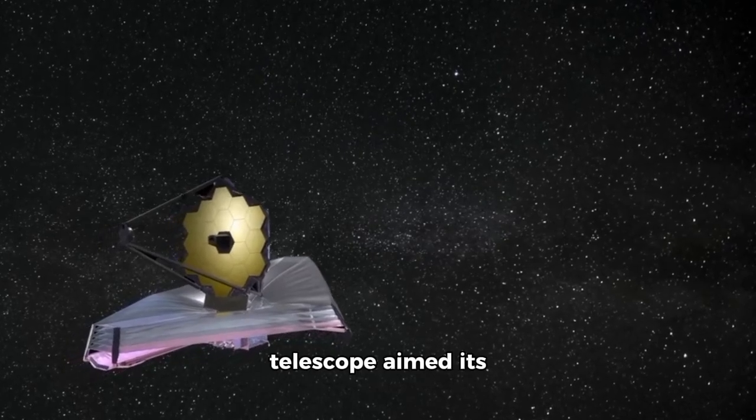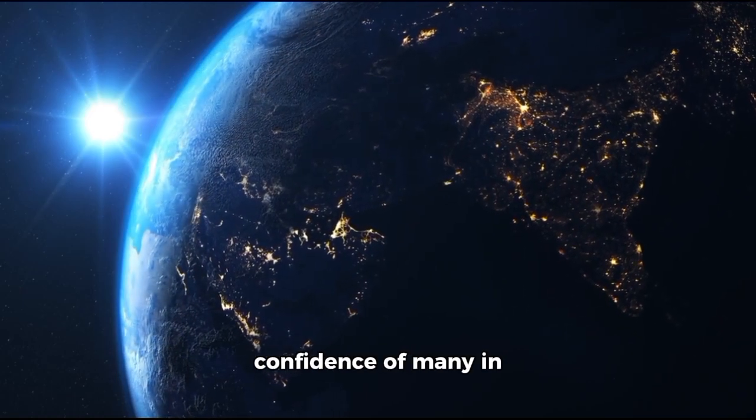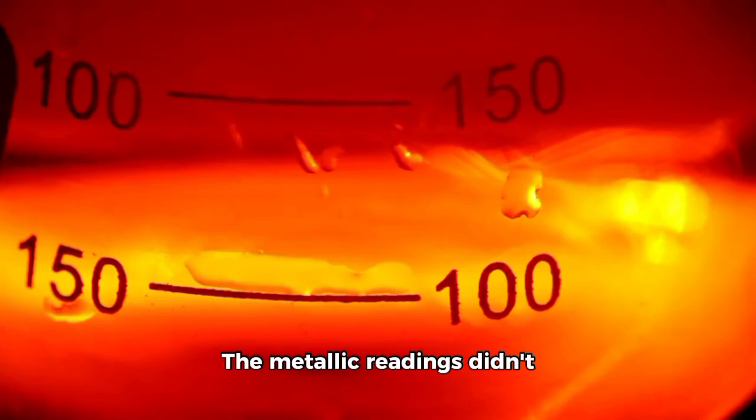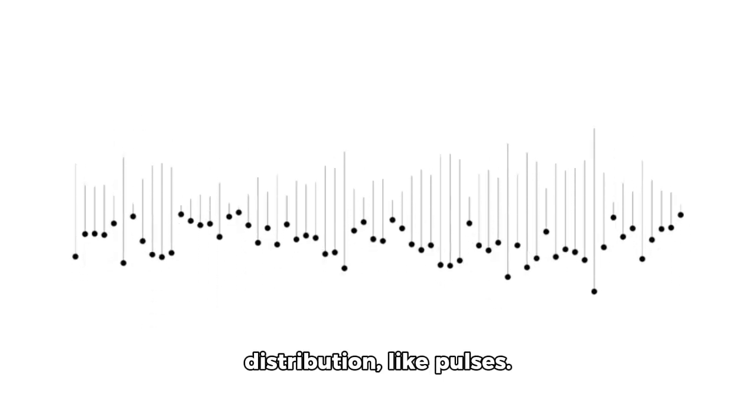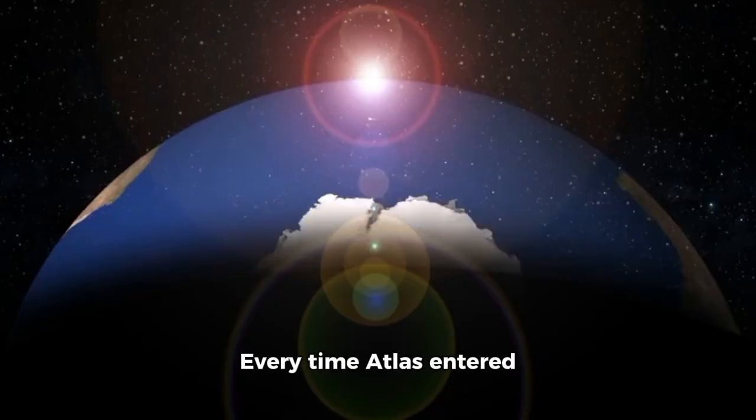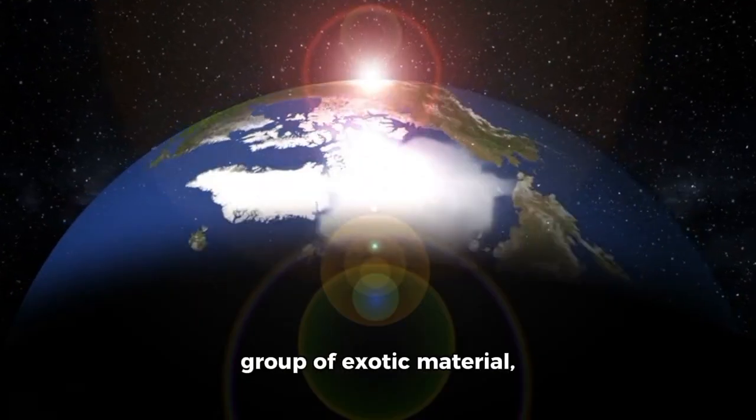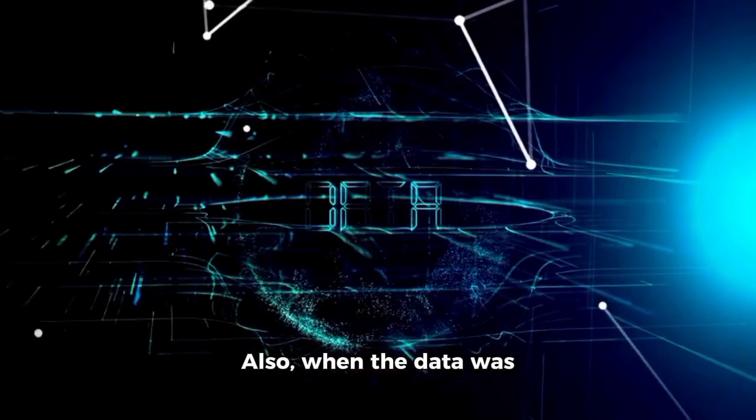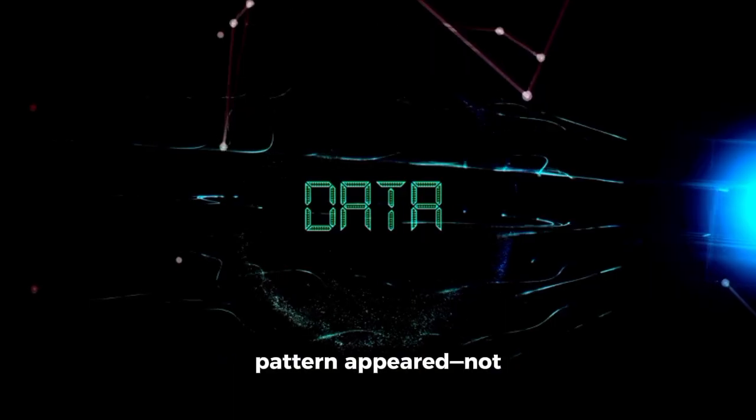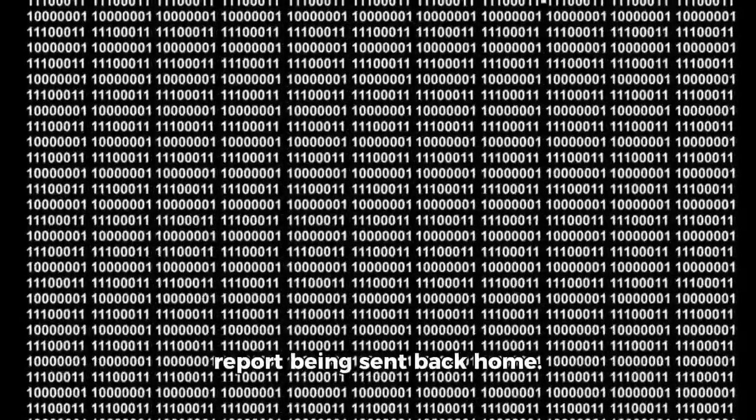When the James Webb Telescope aimed its infrared eye at 3-Eye Atlas, it wasn't just looking for chemical composition. It was listening, in its own way, for order. And what it found has quietly shaken the confidence of many in the scientific community. The metallic readings didn't just confirm the presence of engineered alloys. They revealed a pattern of repeat distribution, like pulses. Bursts of material emission timed in. Every time Atlas entered or passed close to a planet's new zone of gravitational influence, it released a brand new group of exotic material, each with a slight chemical signature. Webb spectrographs recorded it with great accuracy. Also, when the data was laid out across time, a pattern appeared—not random, not biological, not even geologic, systematic, like an update or worse, a report being sent back home.